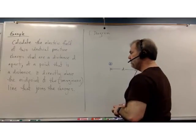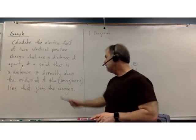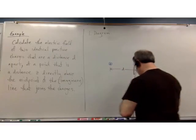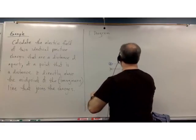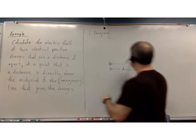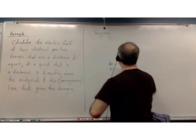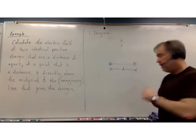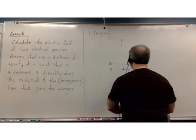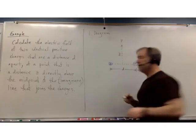Where do we want to calculate the field? At a distance D directly above the midpoint — the imaginary line that joins the charges. Our point P is going to be directly above that. That vertical distance we're told is distance Z.